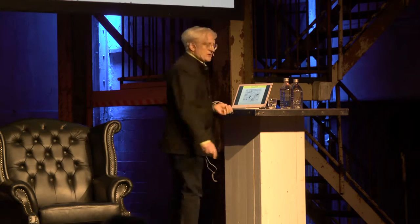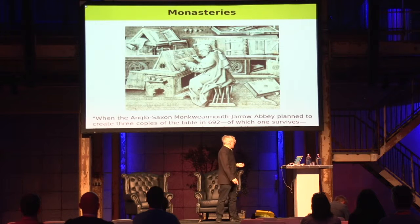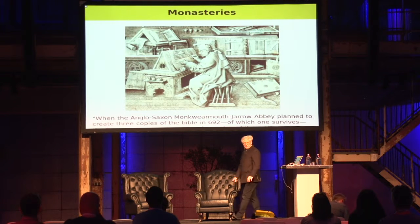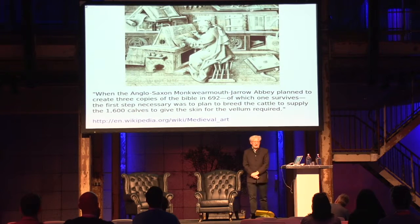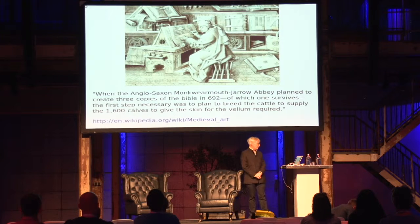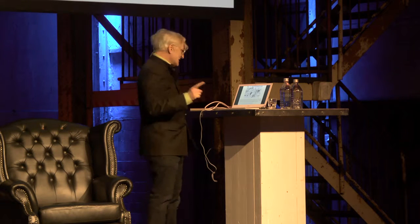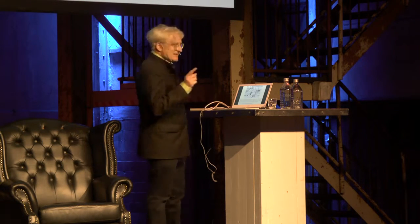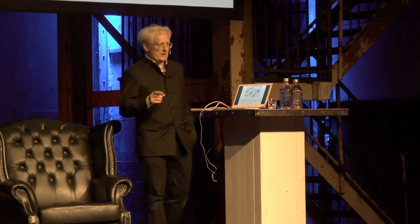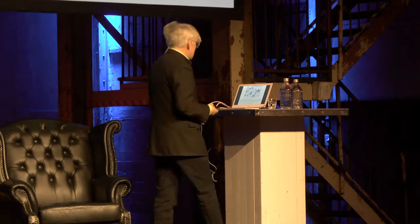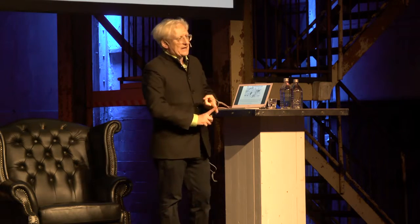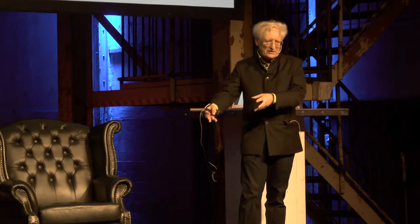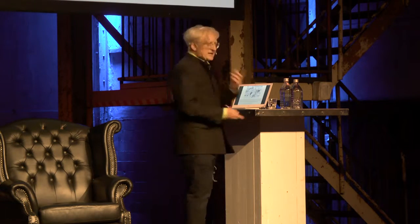The other main way of reproducing books was the monasteries, where most books were produced — which was nice for the people in power because it meant they could control very carefully what was being produced. This quote from Wikipedia shows how difficult it was: when Wearmouth-Jarrow Abbey planned to create three copies of the Bible in 692, the first step necessary was planning to breed the cattle to supply the 1,600 calves necessary for the vellum required. Books were written on very supple vellum from young calves, so they first had to get the land, raise the cows, breed the calves, and get the vellum — before they'd even started writing.